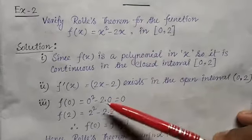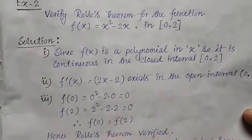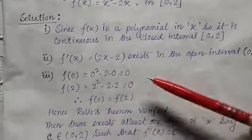So that means three conditions of Rolle's theorem are satisfying. So the statement is hence Rolle's theorem verified. So when Rolle's theorem is verified...